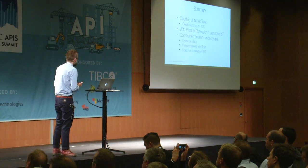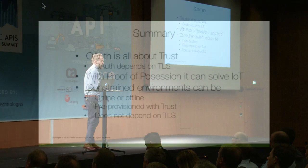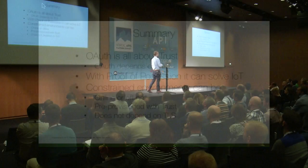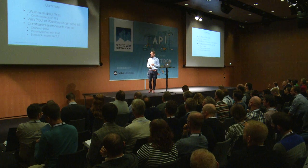So to conclude: OAuth is actually all about trust. However, it depends on TLS to do this on the internet. With proof of possession — which was this whole flow — I could prove that I had something without telling you what it was. We can solve the IoT case. Constrained environments can be online or offline, and we can scale our OAuth infrastructure to solve this. It requires you to pre-provision trust, because we don't have the whole PKI world that we have on the internet, but that is a small price to pay. And we don't have to depend on application layer security for it. Thank you. That was all I had.